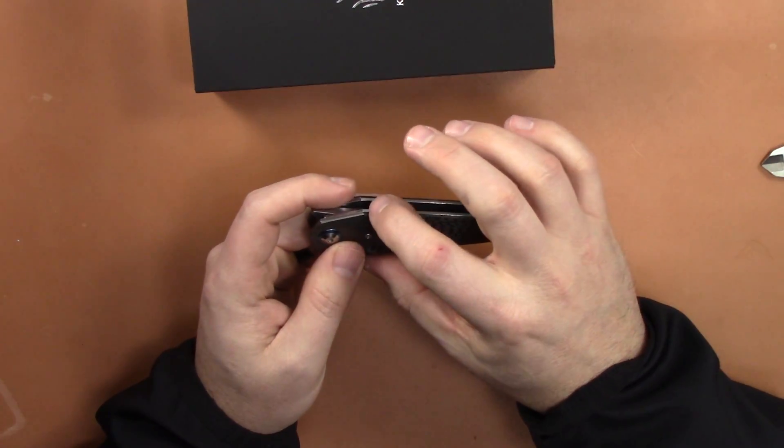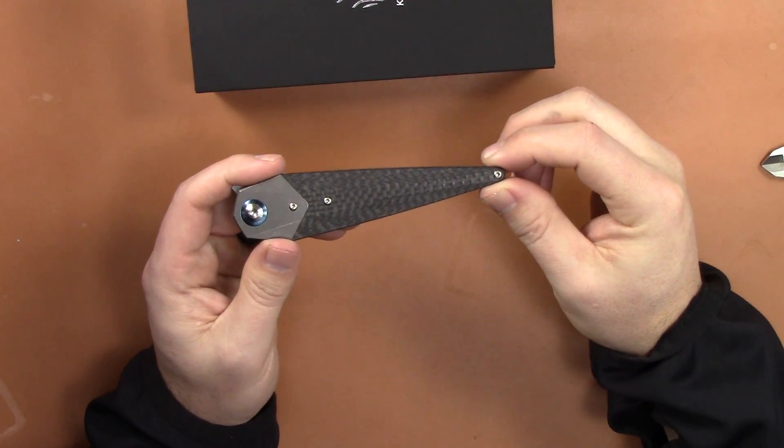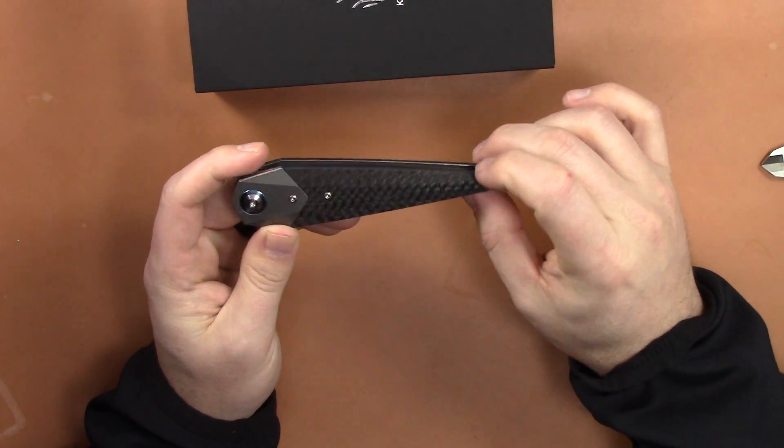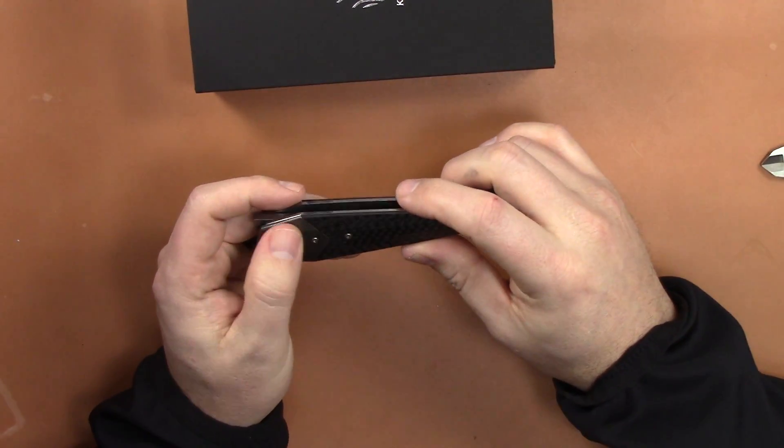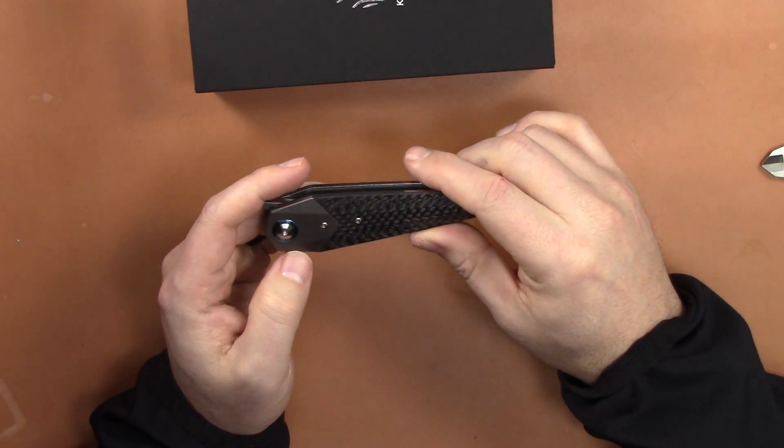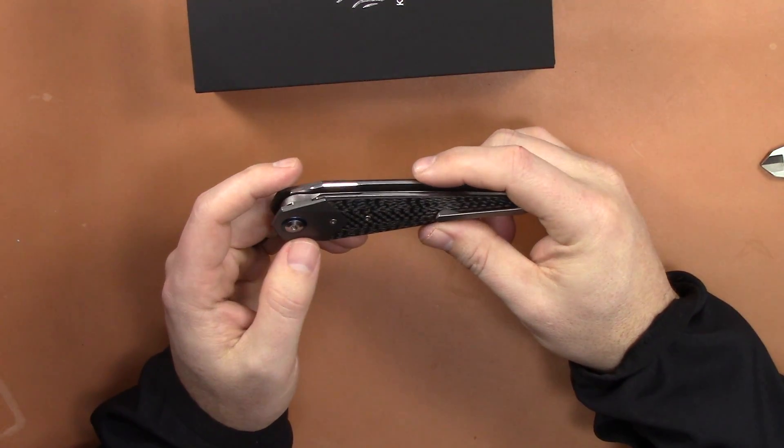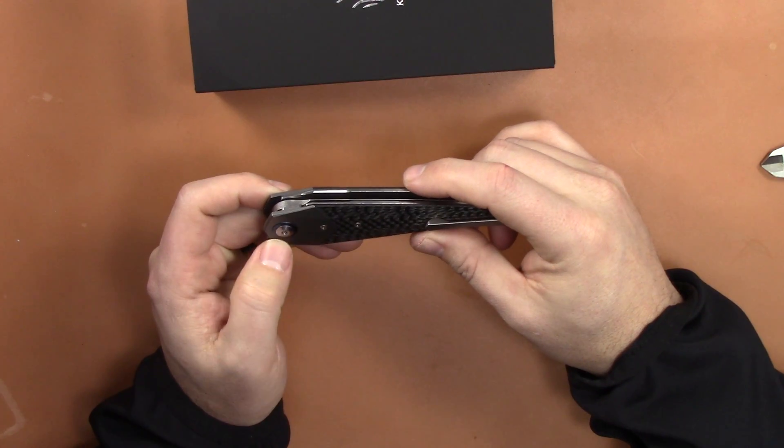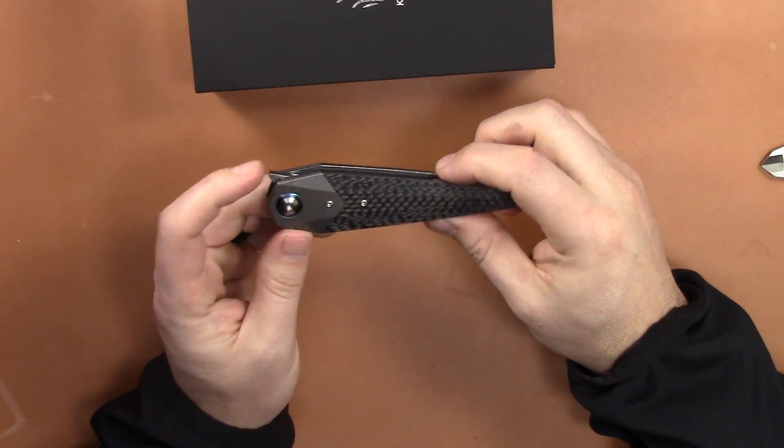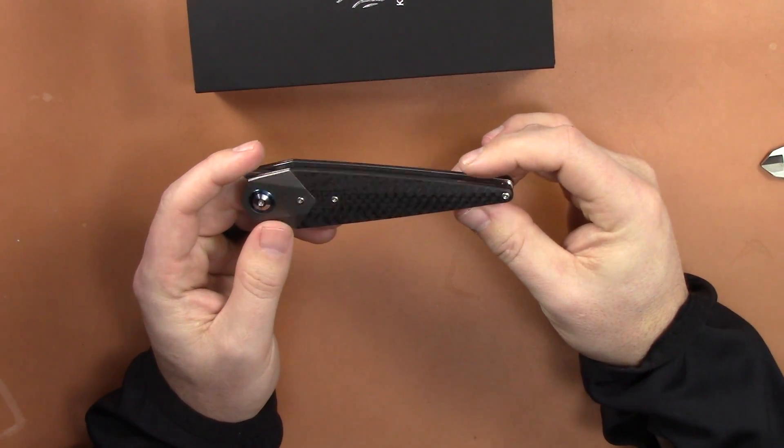This carbon fiber is very well done, and the transition to the bolster is very well done, especially for under 200 bucks. You have a nice blue pivot collar here and then your new Kaiser style pivot. They have changed their style pivot which is nice, a lot of people would request that.